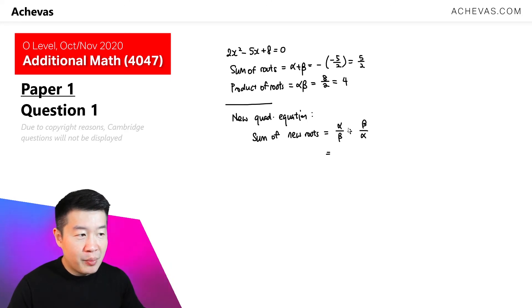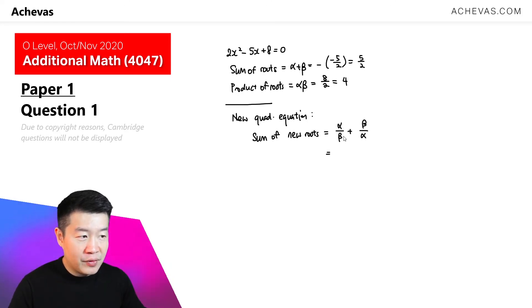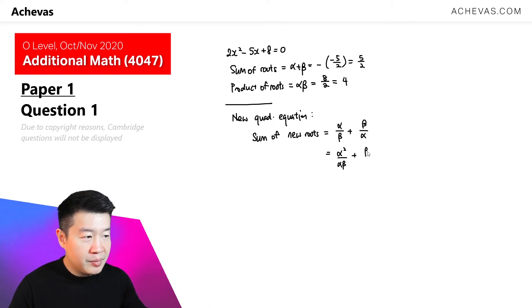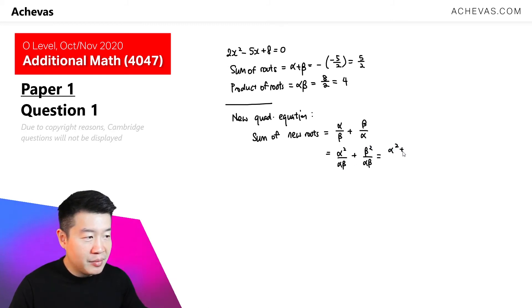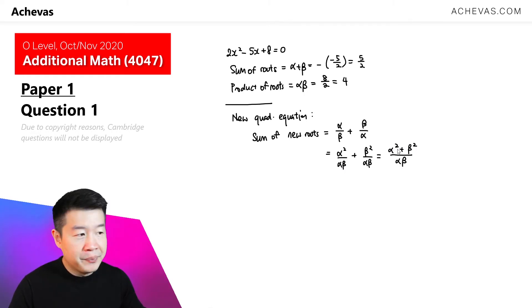If we combine this into one single fraction with a common denominator, alpha squared over alpha beta plus beta squared over alpha beta, this becomes alpha squared plus beta squared, all divided by alpha beta.